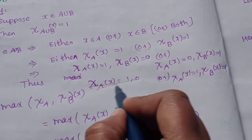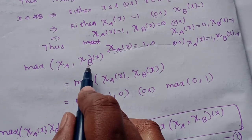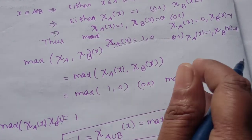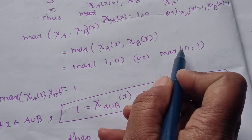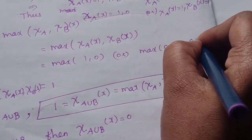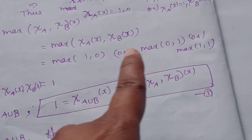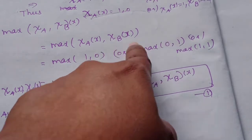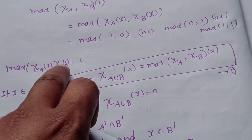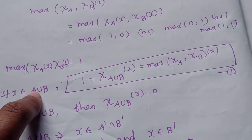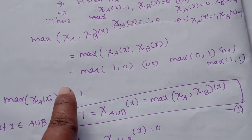So there are three possibilities for the maximum of psi A of x and psi B of x: maximum of (1, 0) equals 1, maximum of (0, 1) equals 1, and maximum of (1, 1) equals 1. In all three cases the maximum is 1. So maximum of psi A of x and psi B of x equals 1, which equals psi of A union B of x when x belongs to A union B.